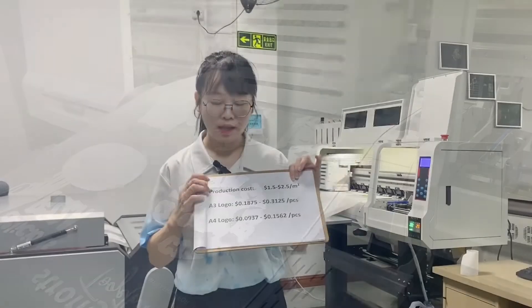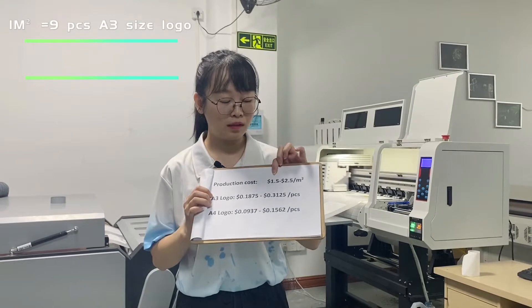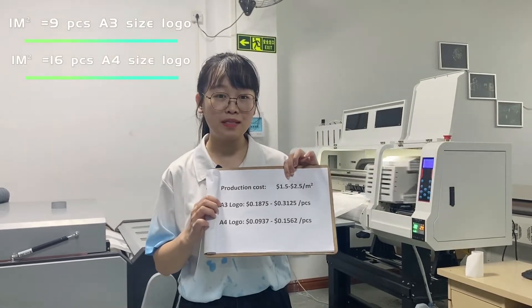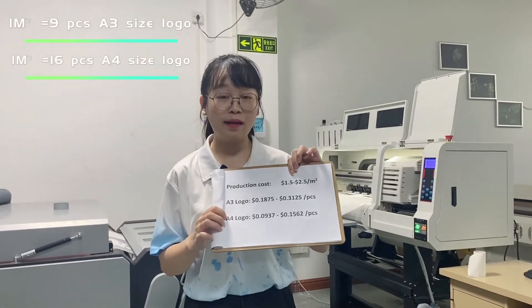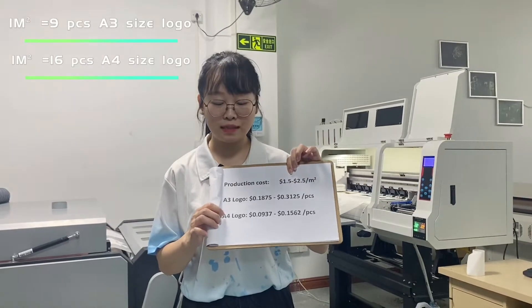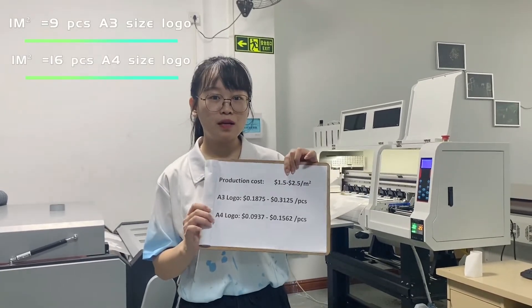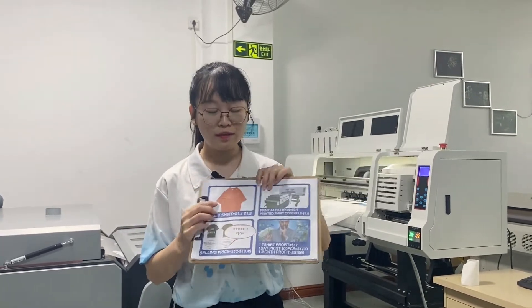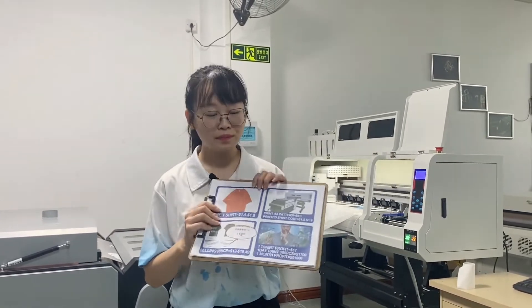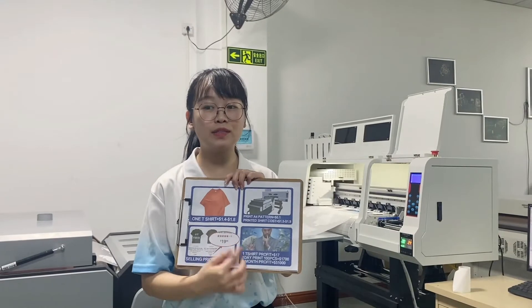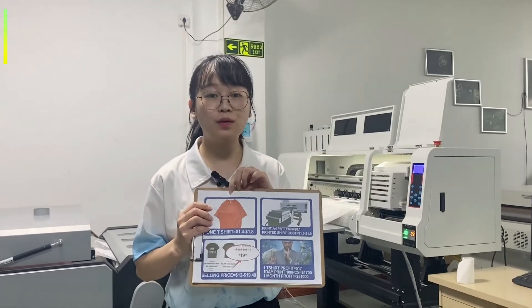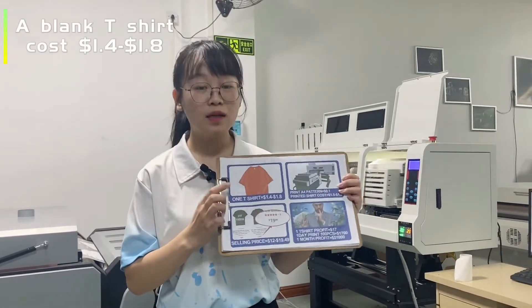In one square meter there are 8 pieces of A3 logos and 16 pieces of A4 logos. So if we print an A4 pattern on the t-shirt, here is the production cost for your reference.